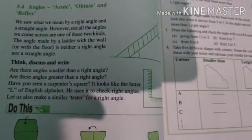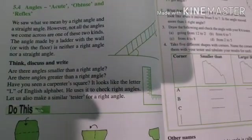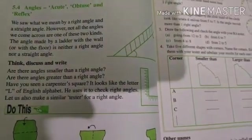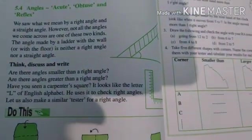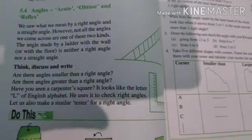Hello students of Class 6, so continue the chapter number 5, Understanding Elementary Shapes, Topic Angles. As we have done two types of angles, Straight Angle and Right Angle. Straight Angle is of 180 degree and Right Angle is of 90 degree.